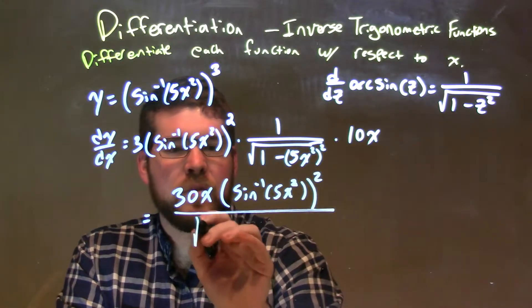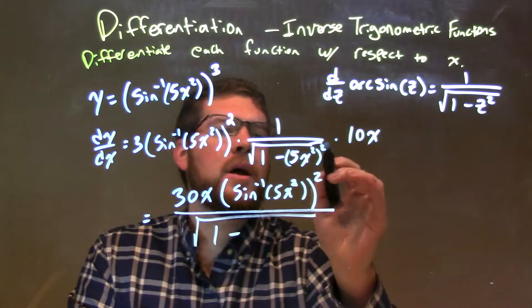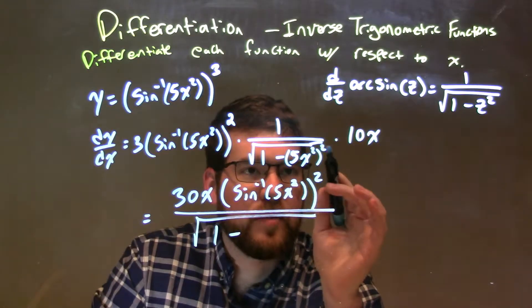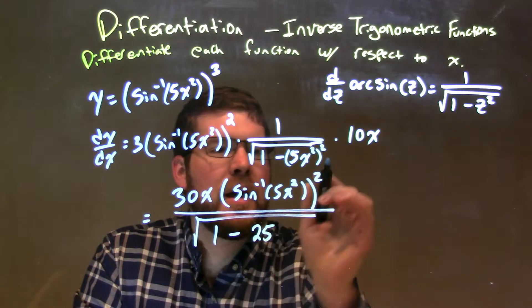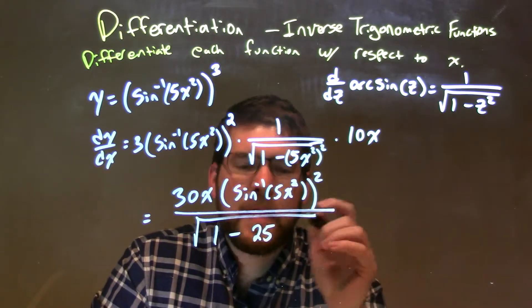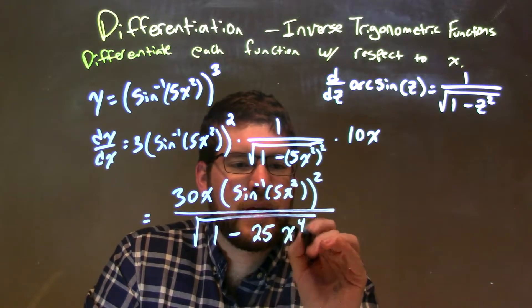Now the denominator, I'm going to bring that down to the square root of 1 minus, but we can square this 5x squared. 5 squared is 25, and x squared all squared is x to the fourth power. And there we have it.